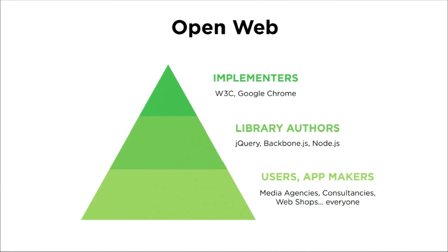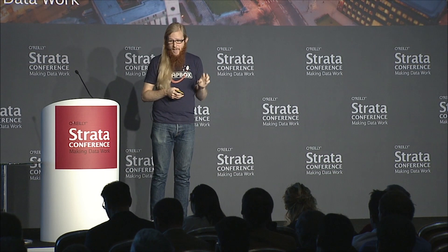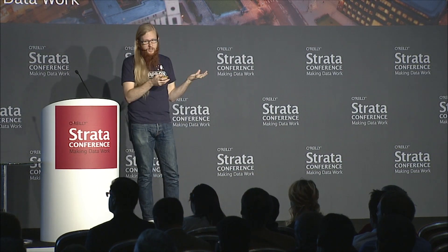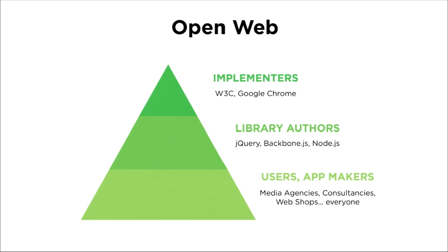There's another problem: this is how I see the open web working today. At the top, a very small minority of places design and implement the platform — like W3C, or people working on Chrome at Google or Firefox. At the bottom, people use the web for business, media agencies, consultants. And in the middle is a critical piece the web does well: people who take difficult implemented APIs and make them palatable to normal people — tools like jQuery, Backbone.js, and Node.js. The library authors in the middle are pretty well represented, forming a healthy balance between these three stratified layers.